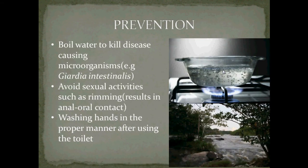To prevent Giardiasis, you can follow these steps: boil water to kill Giardia intestinalis; avoid sexual activities such as rimming, or abstain completely, as such activity results in anal-oral contact; and wash your hands properly after using the toilet.